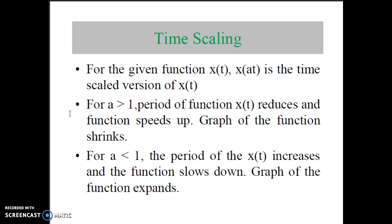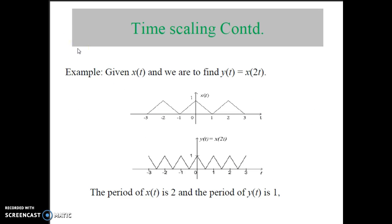If the value of a is less than 1, the period of the original waveform x(t) increases and the function slows down — meaning the graph of the function expands. Let us consider x(t) as the original signal and draw y(t) equal to x(2t). Here x(2t) represents the original signal scaled by a factor of 2, so a equals 2, which is greater than 1, and compression of the signal takes place.